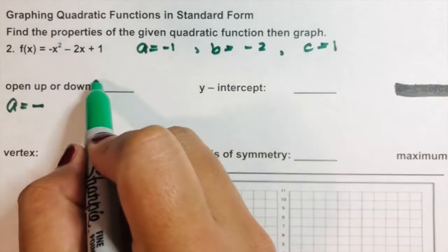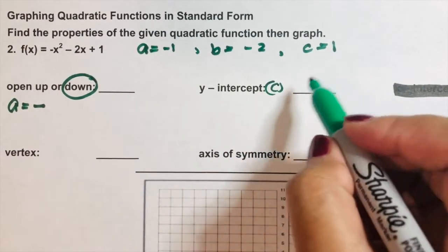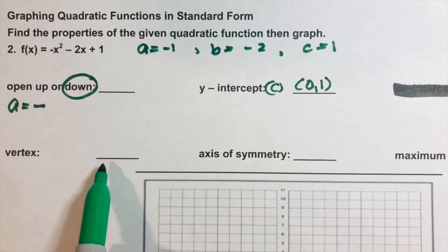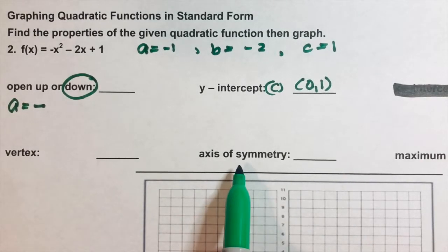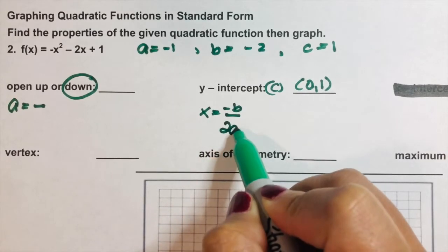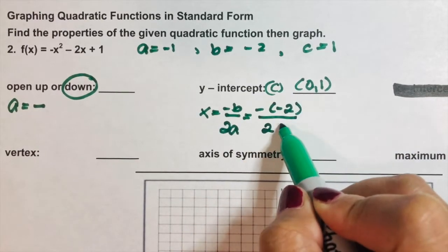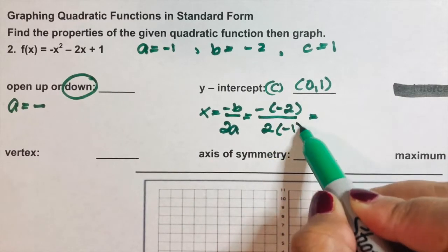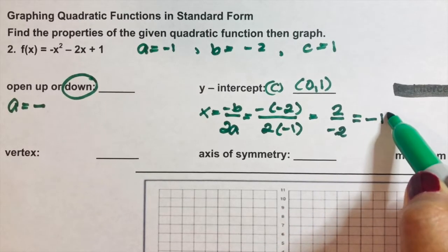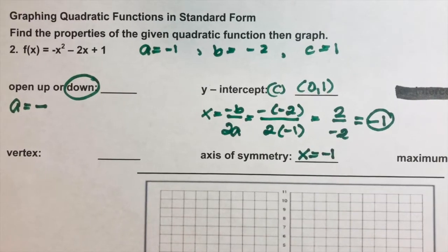Therefore, the graph opens downward. The y-intercept is simply the value of c, which is 1, so our y-intercept is (0, 1). For the axis of symmetry, x = -b / 2a: b is -2 and a is -1, so this gives positive 2 over negative 2, which equals -1. Our axis of symmetry is x = -1.